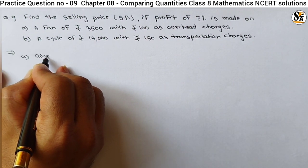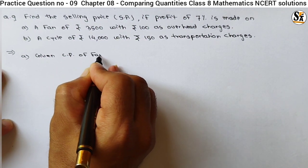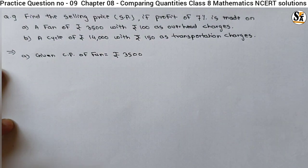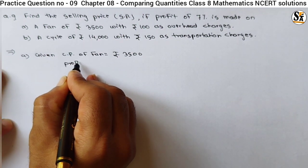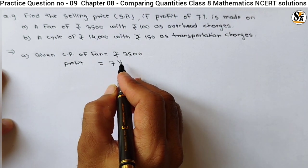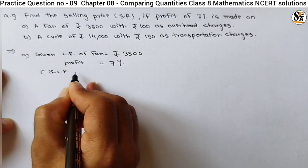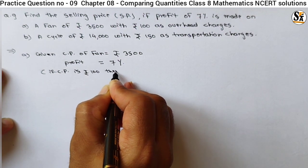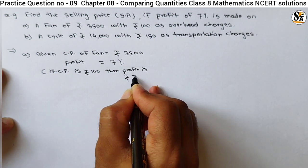In the first condition, what is given? The cost price (CP) of the fan is equal to rupees 3500. Profit is also given, and that is equal to seven percent. Now, what is the meaning of this percentage? If CP is rupees 100, then profit is rupees 7 — that is the meaning of this percentage.